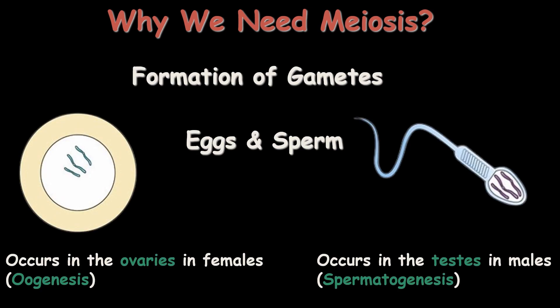Why do we need meiosis? Meiosis is needed for the production of germline cells, such as gametes — eggs and sperm cells. Egg cell production takes place in the ovaries through the process known as oogenesis, while sperm production takes place in males in the testes through the process known as spermatogenesis. Both oogenesis and spermatogenesis follow the process of meiosis.